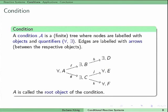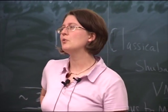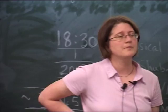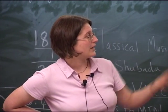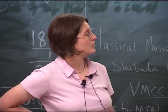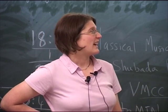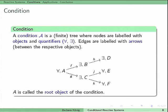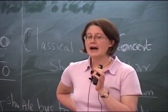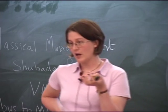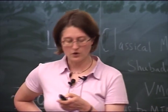What is a condition? A condition A is a finite tree where nodes are labeled with objects and quantifiers. For instance, a node is labeled with quantifier 'for all', object A. The edges of the tree carry the arrows of the category, so that F is an arrow going from A to B. A is called the root object of the condition. This looks a bit first-order-like, and that is quite true — this is more or less a first-order-like logic, which I will make more precise shortly.